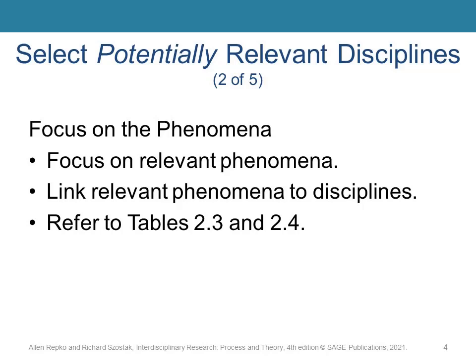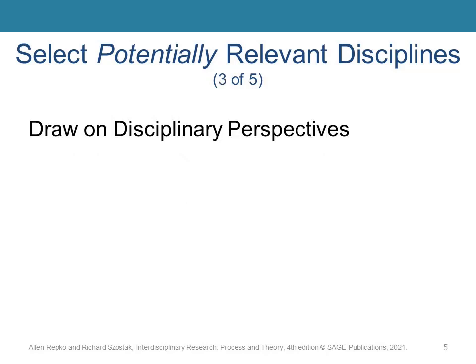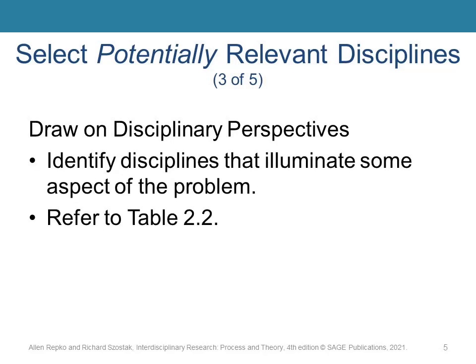Then, table 2.3 should help you tie the phenomena of interest to specific disciplines. In addition to phenomena, we can also consider disciplinary perspectives. Refer to table 2.2 in chapter 2 to see if the problem as a whole is studied by specific disciplines. Again, we will confirm whether the disciplines actually study the topic later.